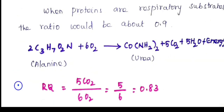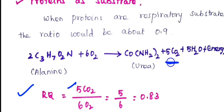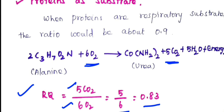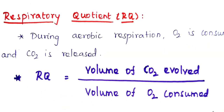The RQ equals the volume of carbon dioxide evolved, which is 5 CO₂, divided by the volume of oxygen consumed, which is 6 O₂. So RQ equals 5 divided by 6, which equals 0.83.